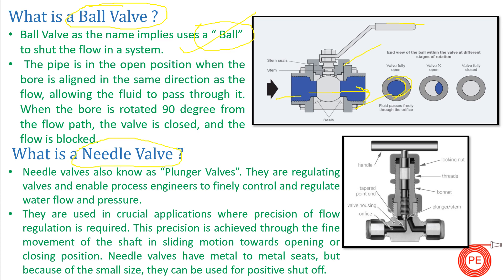Moving on — what is a needle valve? As the name suggests, it is like a needle used for stitching clothes. A needle valve is basically from the plunger valve family. These valves are used for regulating the flow and can also be used as on-off valves.